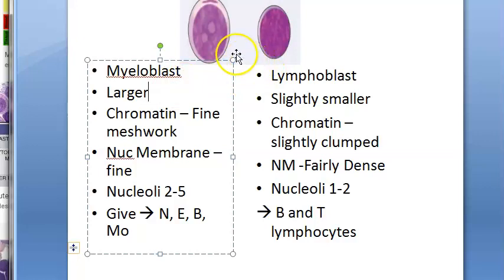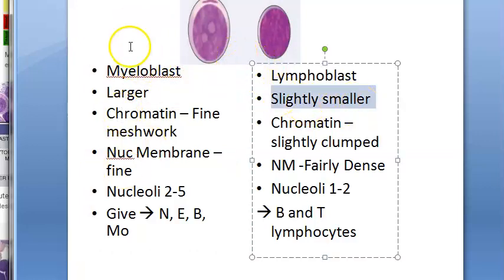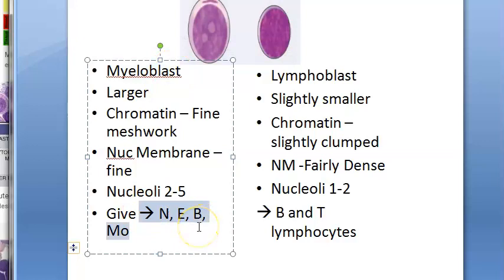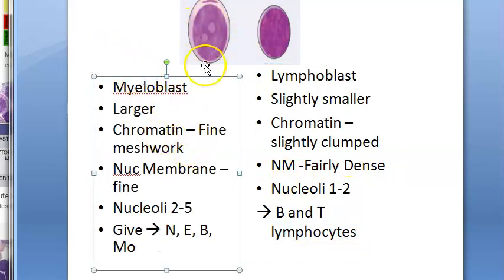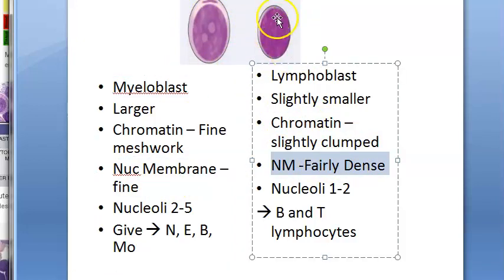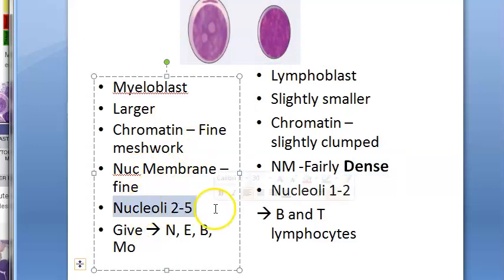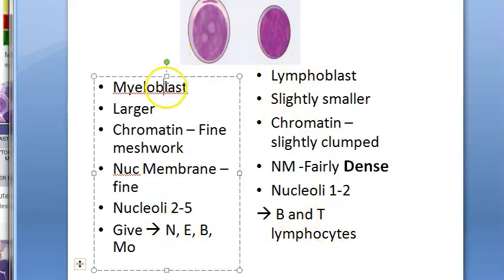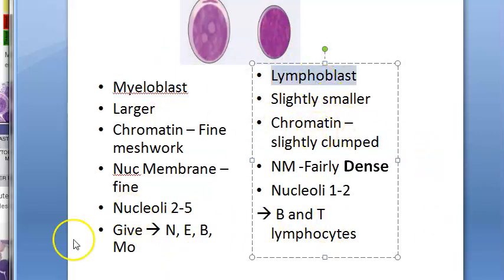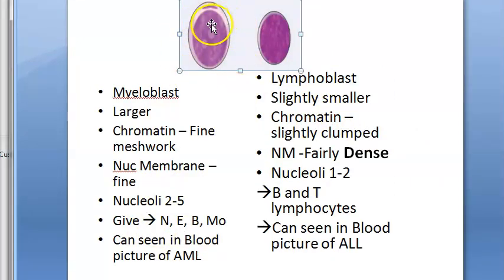Myeloblasts are slightly larger; lymphoblasts are slightly smaller. Myeloblasts give rise to neutrophils, eosinophils, basophils, and monocytes; lymphoblasts give rise to lymphocytes. Myeloblasts have fine meshwork chromatin and a fine nuclear membrane, with 2–5 nucleoli. Lymphoblasts have clumped chromatin, a dense nuclear membrane, and fewer nucleoli. Auer rods can be present in myeloblasts (seen in AML, not CML) but not in lymphoblasts.